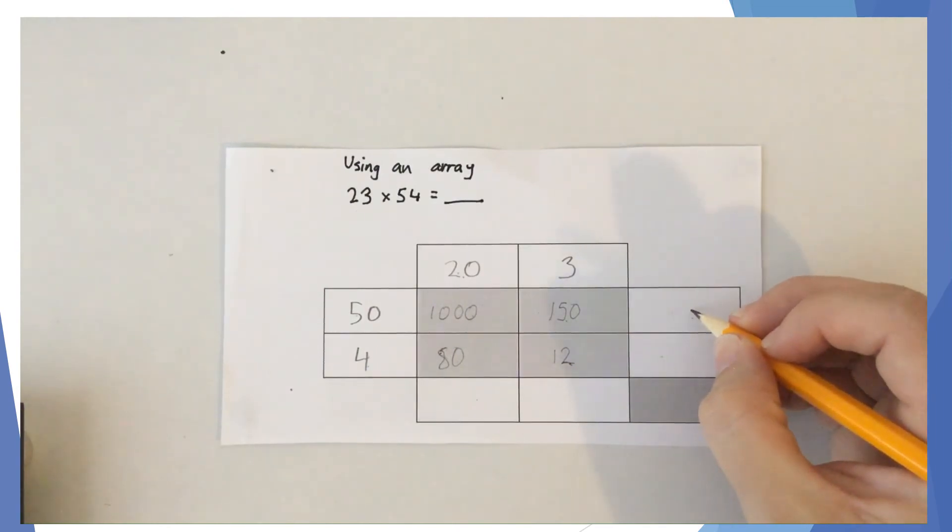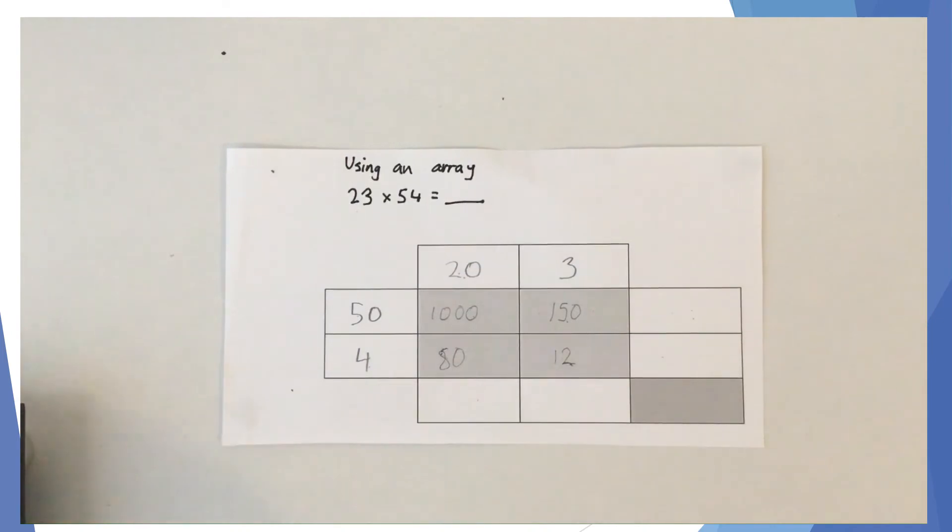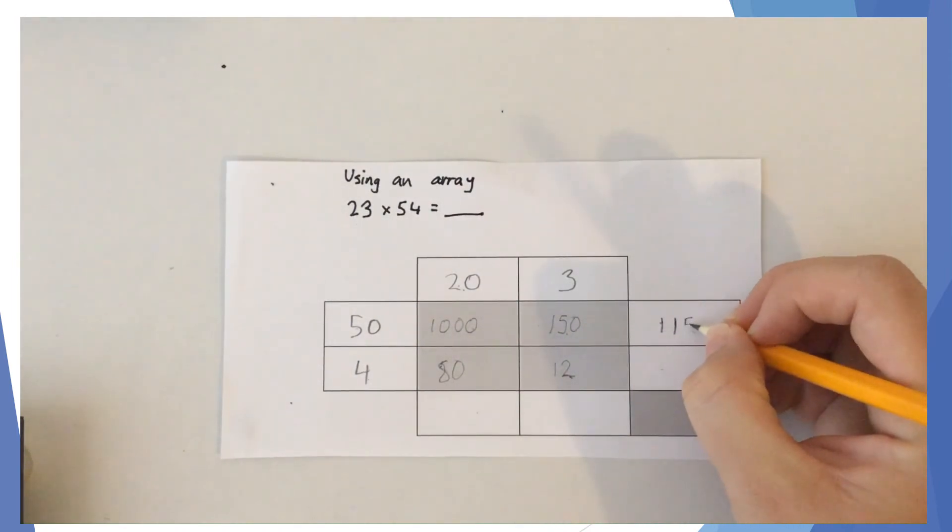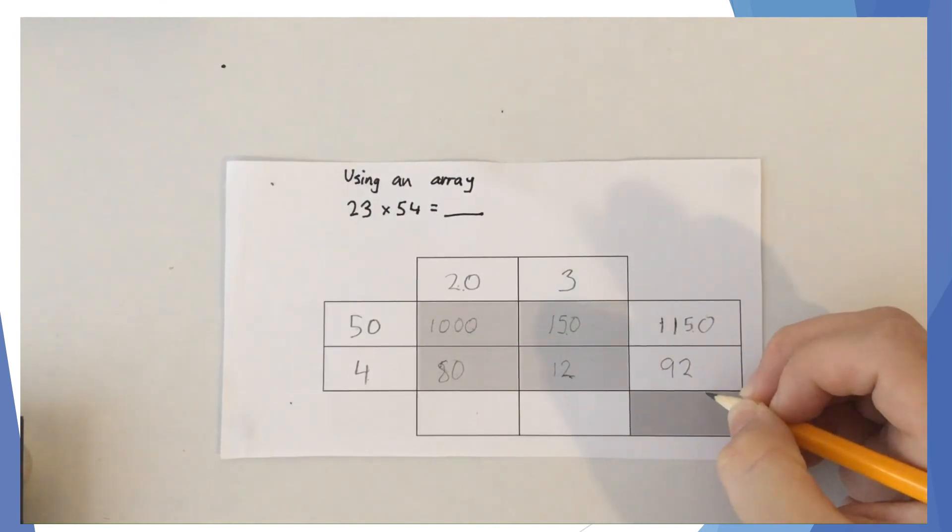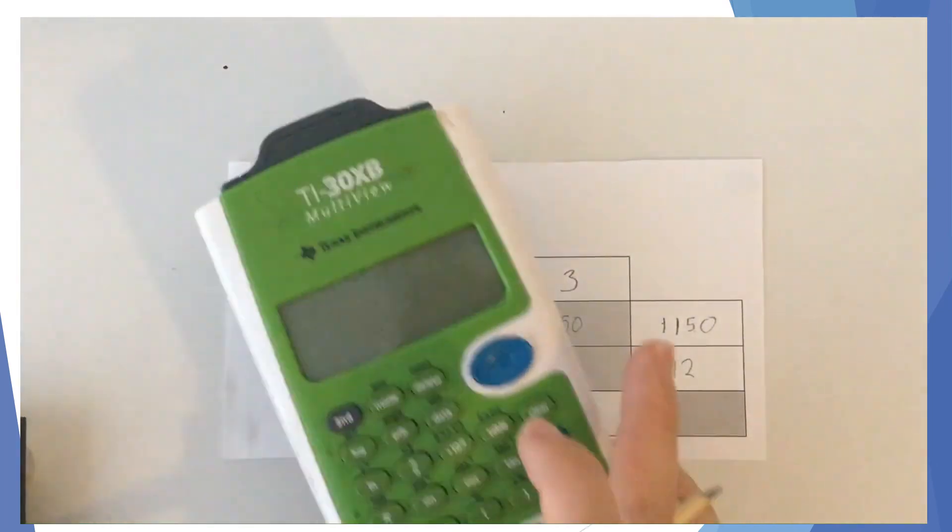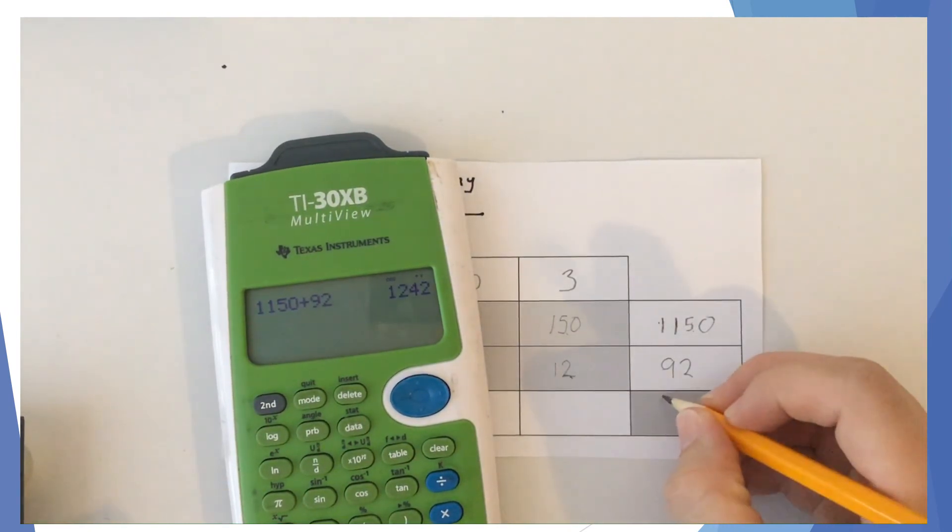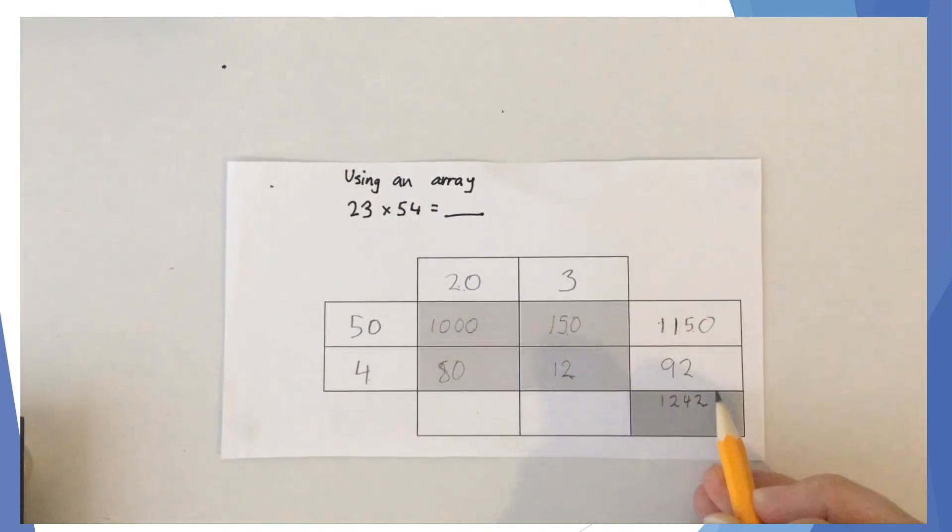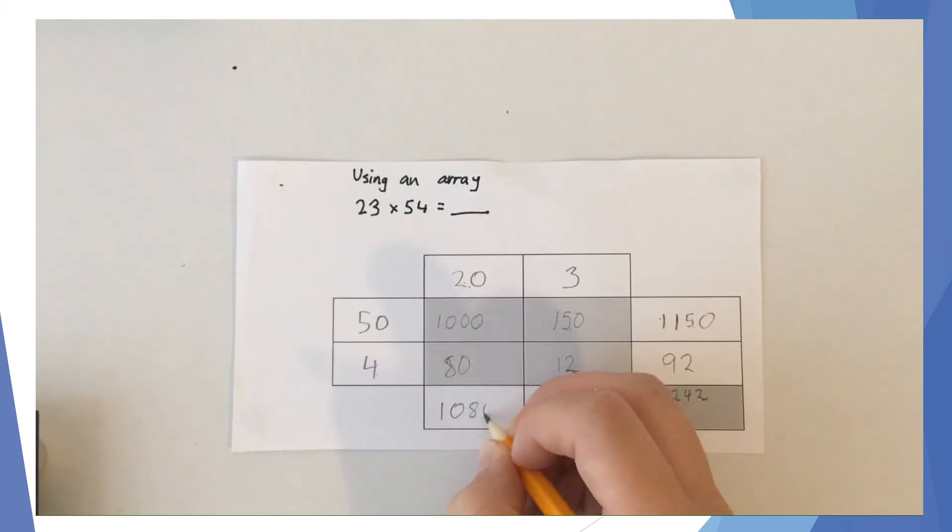It doesn't matter which way you do it, because if we've done it correctly, the answer should be the same either way. We're going to do it both ways to check our answer. 1,000 plus 150 is 1,150. 80 plus 12 is 92. Now I'm going to use my calculator - 1,150 plus 92 gives me 1,242.